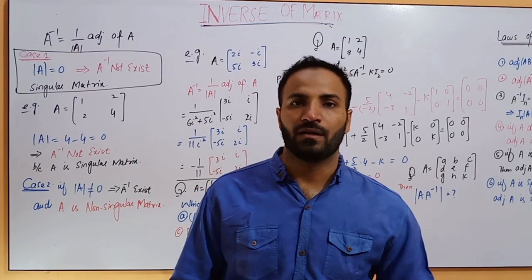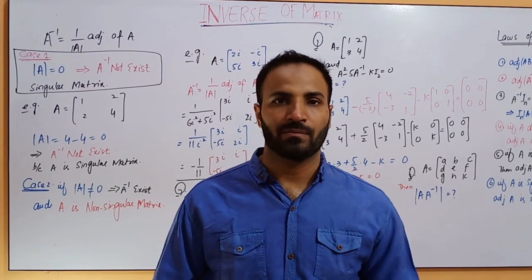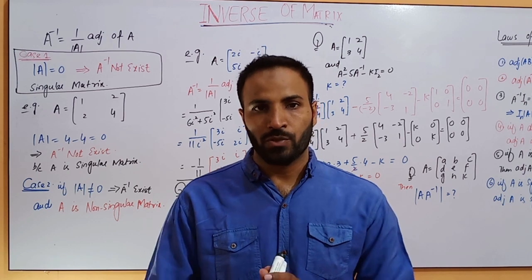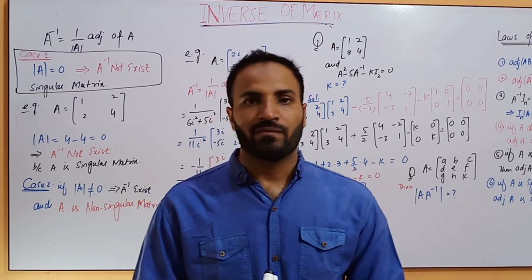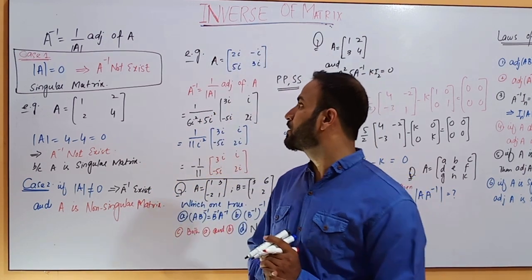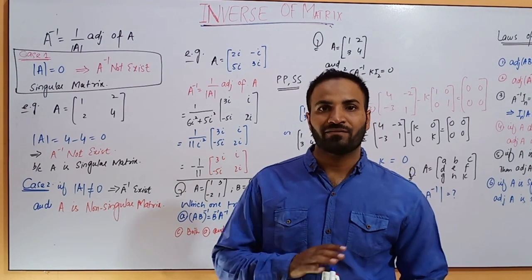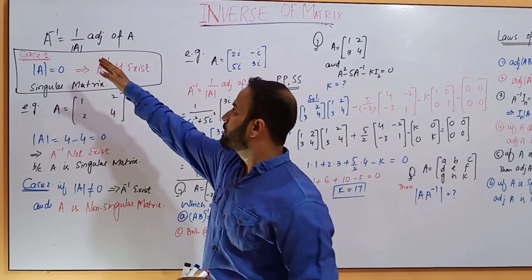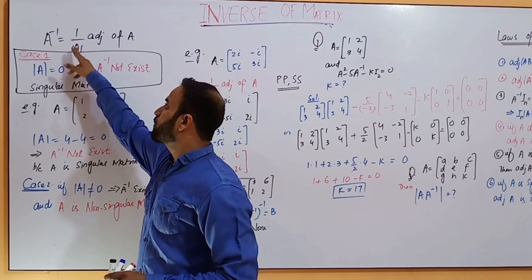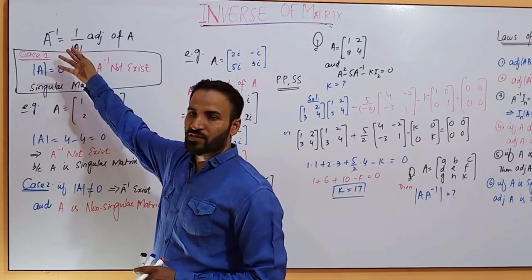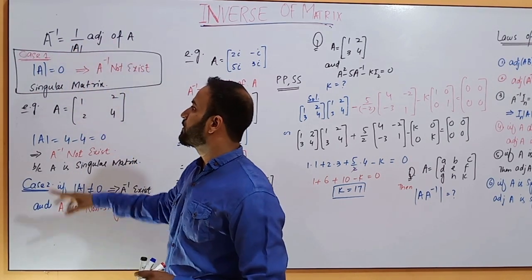Hi students, I am Rashid Ayoub, Professor of Mathematics. Today I am going to discuss a very important topic: the inverse of a matrix. The formula for the inverse of a matrix is: A inverse equals 1 over |A| (the determinant of A), multiplied by the adjoint of A.